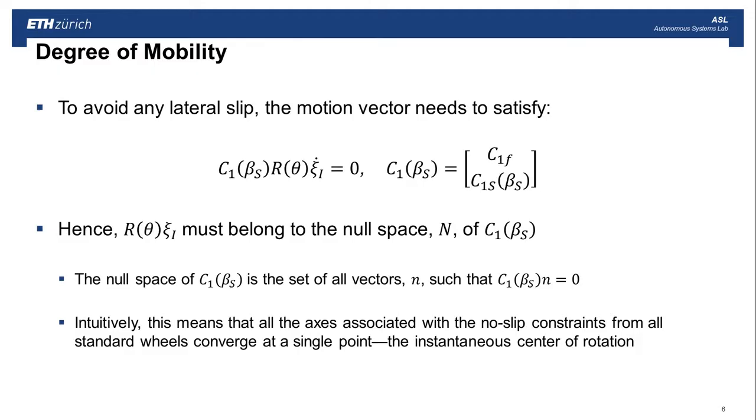So to avoid any lateral slip, we know that the motion of the robot needs to satisfy this no sliding constraint. And if you look at what that means, it means that this component of the equation has to live in the null space of this C1 matrix. So to review, the null space of C1 is the set of all vectors n such that C1 n equals 0. And intuitively, this just means that all the axes associated with the no-slip constraints from standard wheels converge at a single point. And that's the instantaneous center of rotation.